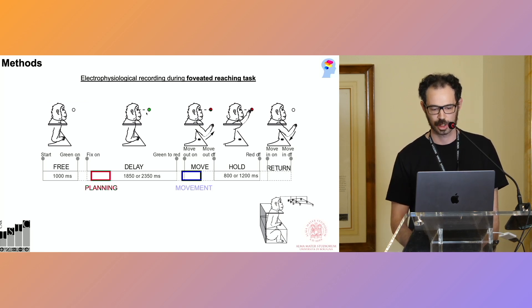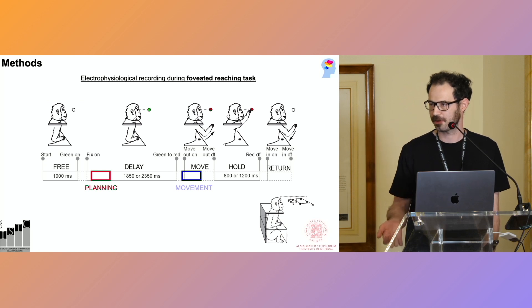That is given by a change of color from green to red. Then the monkey performed the movement and held the reached position until the color of the target switched off. Then returned to the initial position and another trial began.